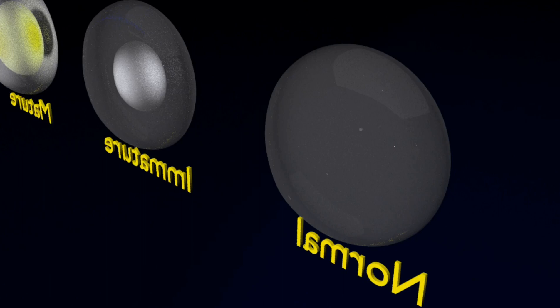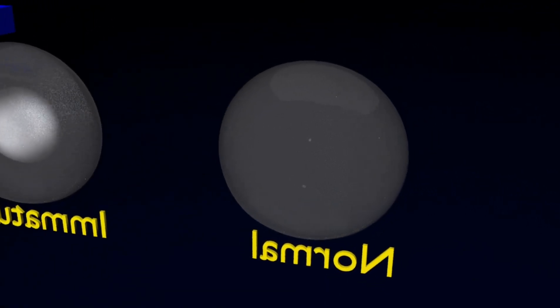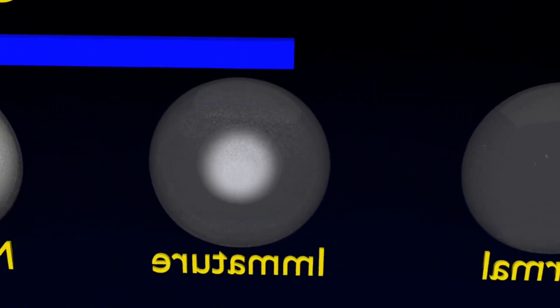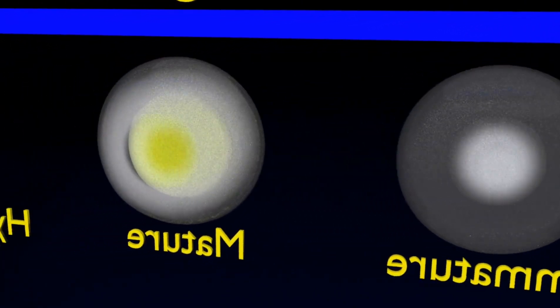The immature cataract: Proteins have started to cloud the lens, making it slightly opaque, especially in the center.